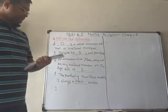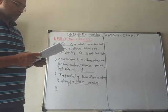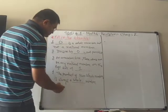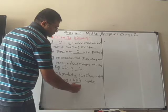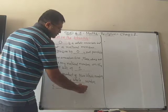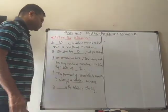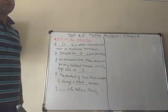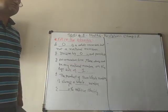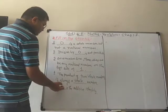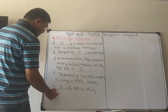Fifth blank: dash is the additive identity. Which number is such that when we add it to any number, the answer remains the same? That is zero. So we call zero the additive identity.